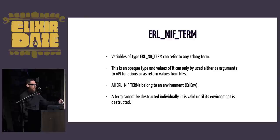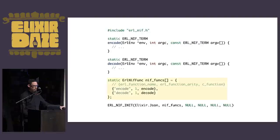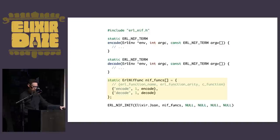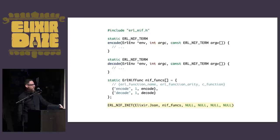The ErlNifTerm is also an opaque type — it represents the Erlang term in C and belongs to the environment. We also have the ErlNifFunc type, which lets us return a list of structs representing the NIF on both the Erlang and C sides. Each struct has a string for the function name in the Erlang/Elixir module, the arity, and a pointer to the C function. Then we call an init macro that specifies the module name, the list of functions, and some null handlers for loading and reloading.